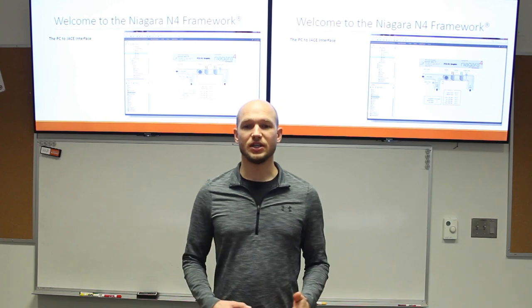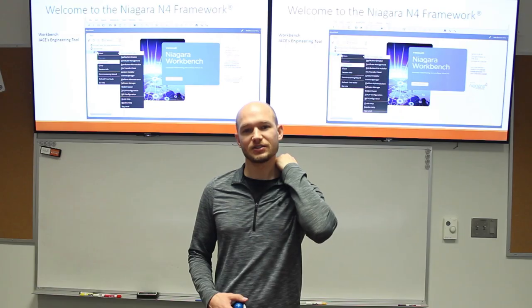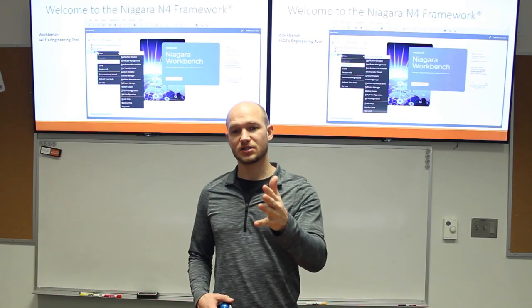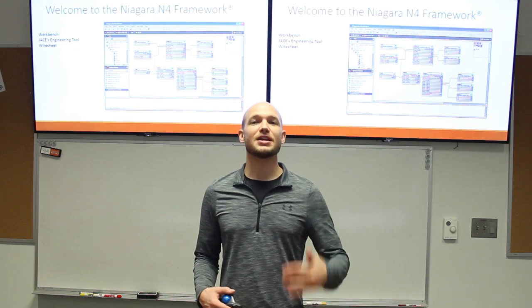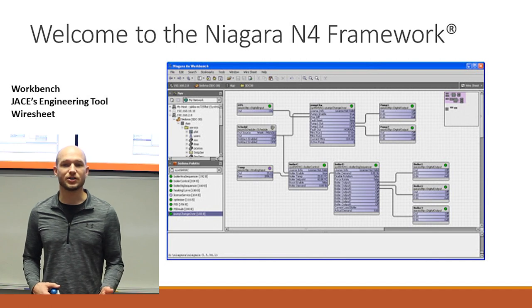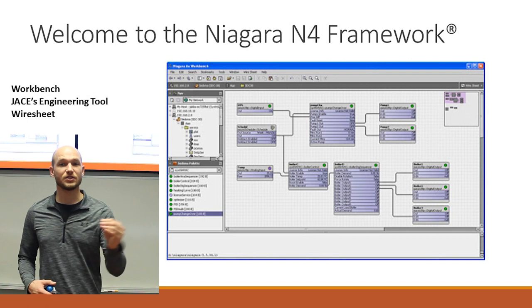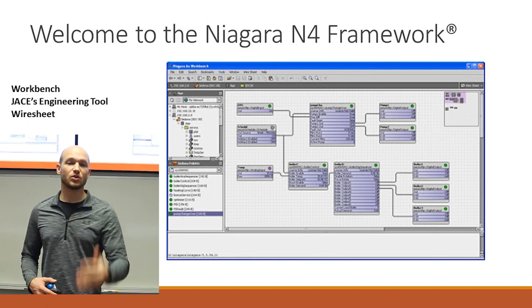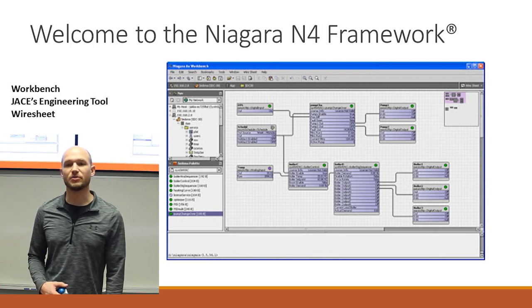Here's a quick picture of the PC-to-JACE interface — we're plugging our PC into our JACE and starting to see some graphics. Workbench — here's a graphic of the actual startup: Niagara Workbench. Once you start diving into the Workbench engineering tool, you get what's called a wire sheet. This is where you start to program: if something does this, it's going to communicate and do this. It looks kind of like a flow chart.